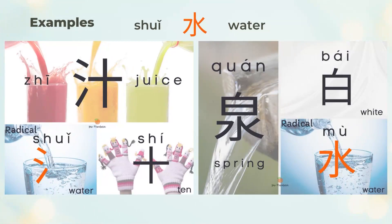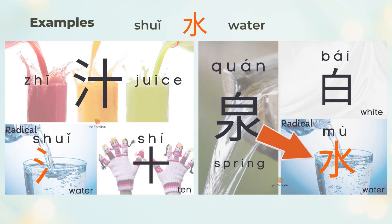汁 means juice. 汁 is the left three-dot 水 (water) and the right 十 (ten). We need water to make juice. 泉 means spring. 泉 is the top 白 (white) and the bottom 水 (water). You may imagine white, clean water as a spring.